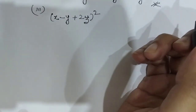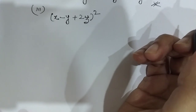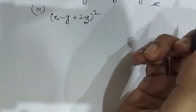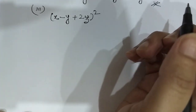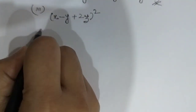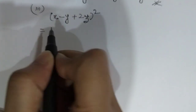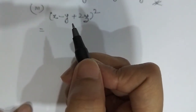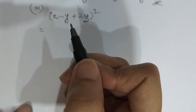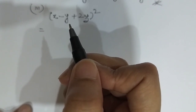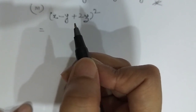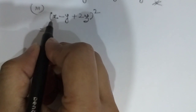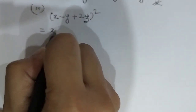Number 3 was x minus y plus 2z whole square. Using the a plus b plus c whole square formula: a plus b plus c whole square equals a squared plus b squared plus c squared plus 2ab plus 2bc plus 2ca.